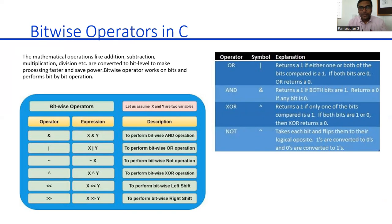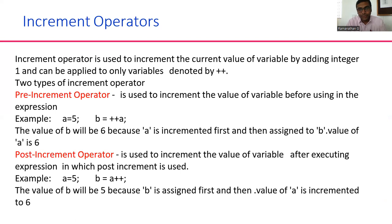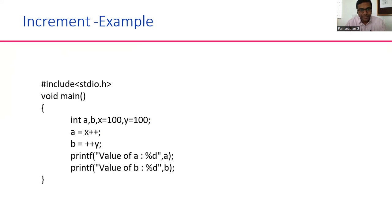Increment operator is used to increment the value, either in looping statements. Most probably we will be using this kind of operators in looping statements: for loop, while loop, do while. To continue the iteration again and again until the condition becomes false. That means incrementing the value by 1. This is one example I want to share with you.